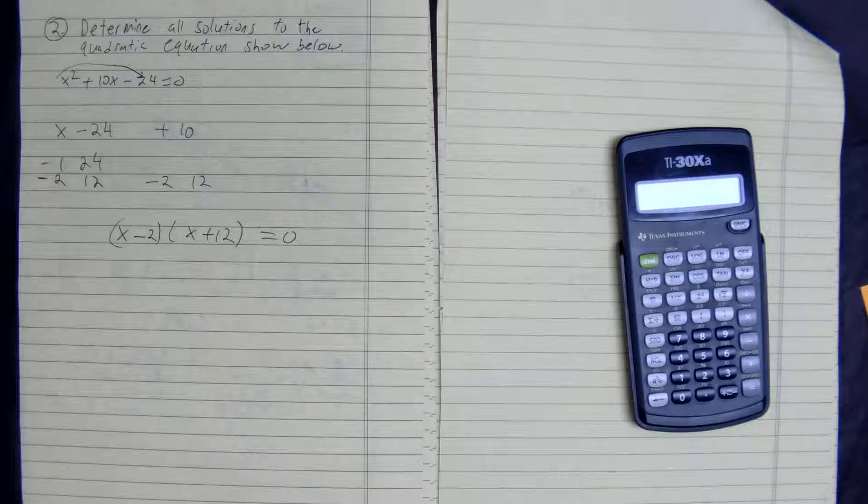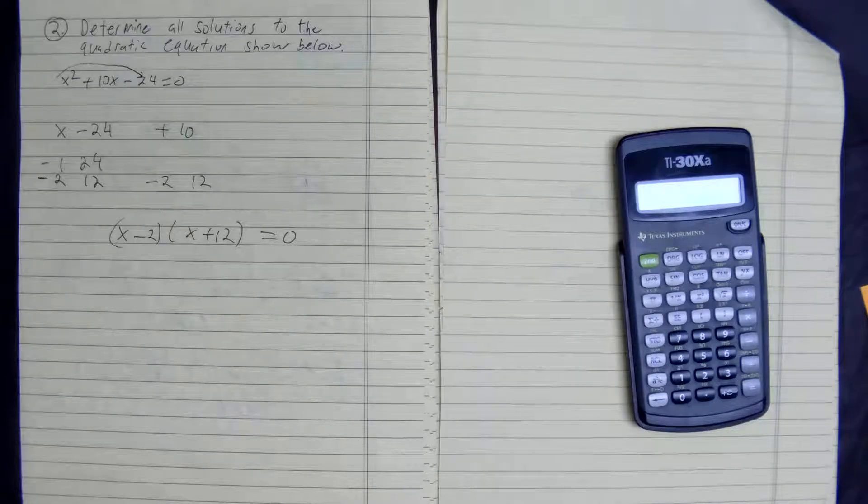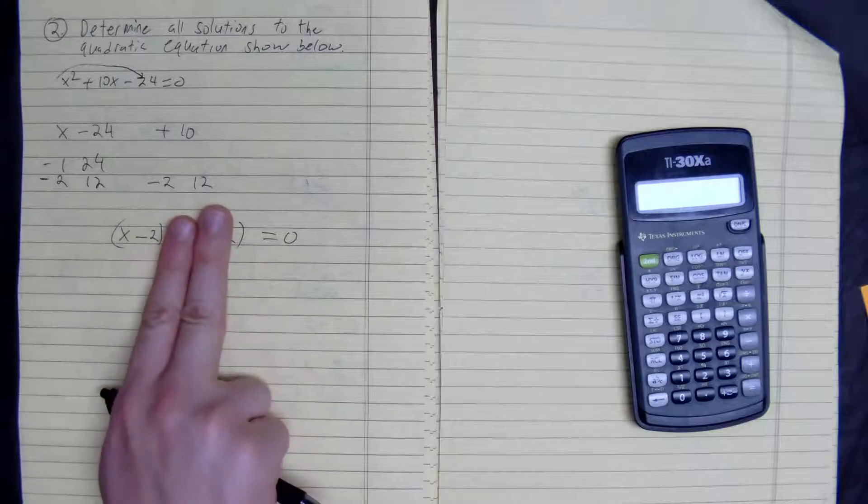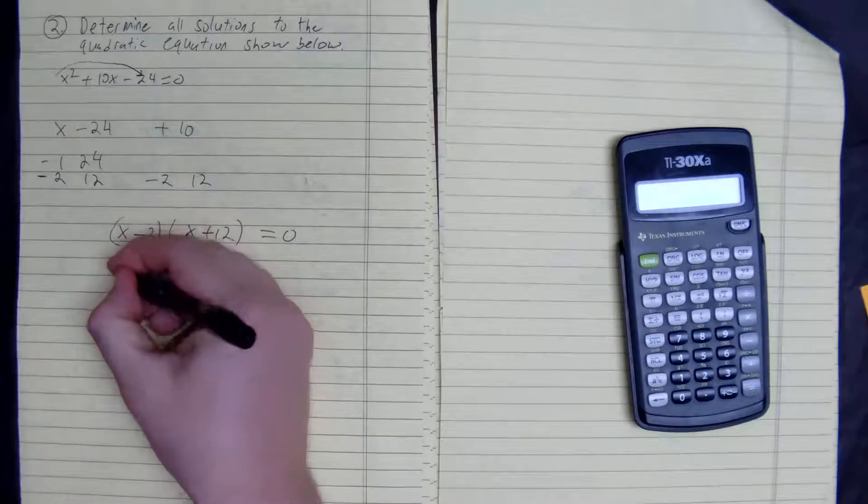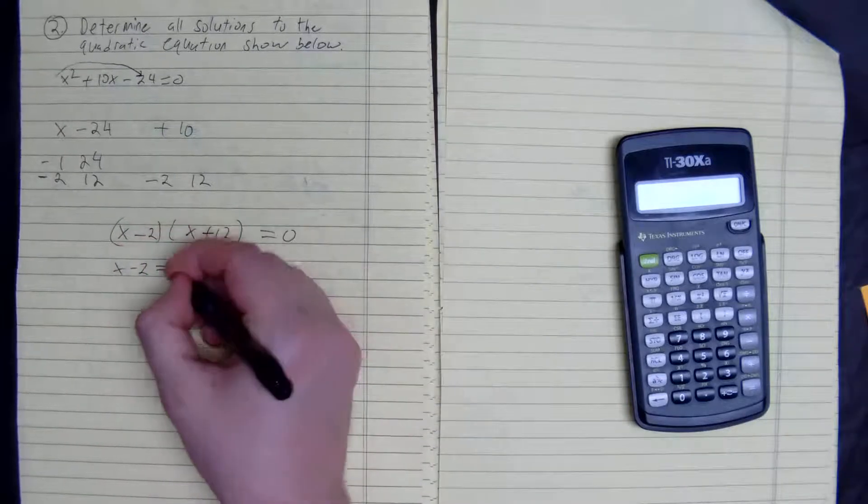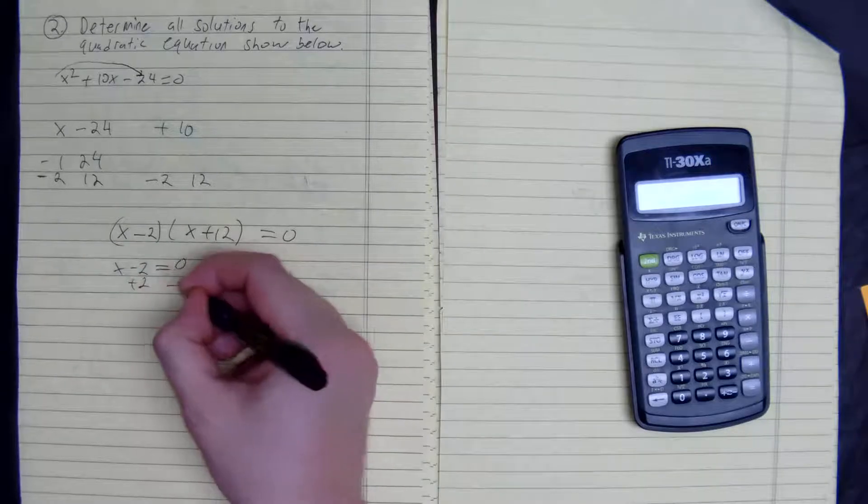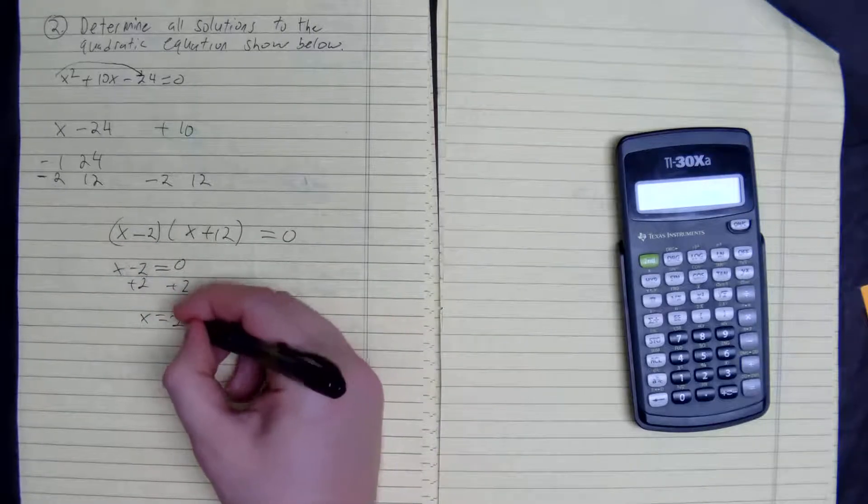Right here, we can use the zero product property to find out our answers. So how do we make this into a zero? You add 2. So our first answer to this set is 2.